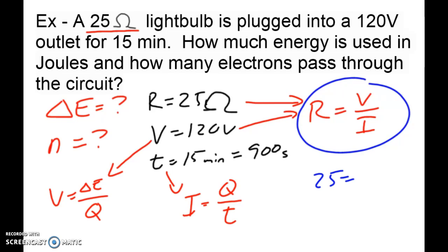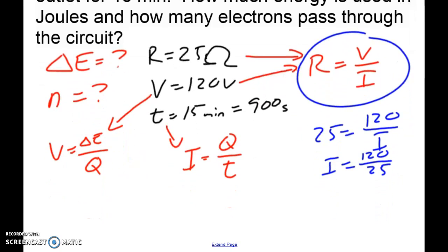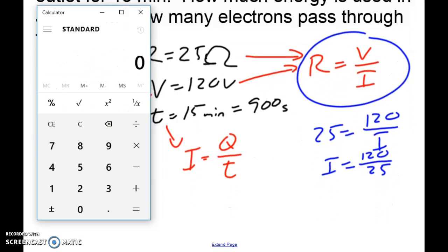So 25 is equal to 120 over I. So I is equal to 120 over 25. So if I take this information about I and I grab my calculator and I plug it in, we'll see that the answer in this case is that current is equal to 4.8 amps.